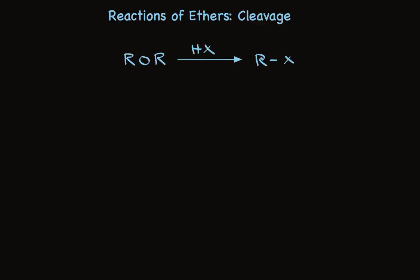When a symmetrical ether is treated with hydrogen halide, alkyl halides result. The hydrogen halide may be HBr or HI. These are the two hydrogen halides that have nucleophiles strong enough — bromide and iodide — to make this reaction happen.